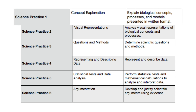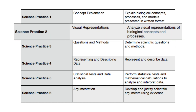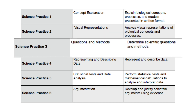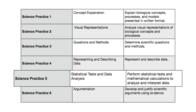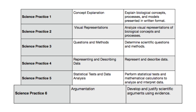Number one: concept explanation — you should be able to explain biological concepts, processes, and models presented in written format. Practice number two: visual representations — you need to analyze visual representations of biological concepts and processes, like the diagrams throughout your textbook. Science practice three: questions and methods — determine scientific questions and methods for solving those questions. Science practice four: representing and describing data — you need to represent and describe data. Science practice five: statistical tests and data analysis — perform statistical tests and mathematical calculations to analyze and interpret data. Science practice six: argumentation — develop and justify science arguments using evidence.